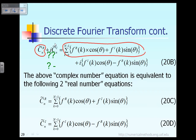To make the story short: if you want to compute the so-called Fourier transform in the discretized way, all you have to do is refer to equation 20c to calculate the real component of c to the n, and refer to equation 20d to compute the imaginary portion of c to the n. Keep in mind that the small i has already been accounted for.